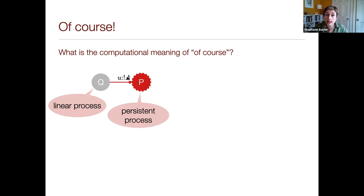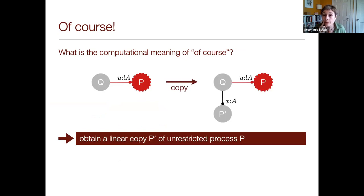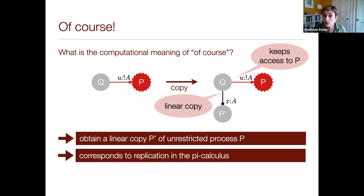The only thing a client can really do with that persistent process is to ask it for a copy of itself. We can obtain a copy, and the client now gets a new linear process created that offers a session of type A along a linear channel X. In addition, the client still retains access to the persistent process P. The bang A corresponds to replication in the pi calculus — we also use the exclamation mark for it there.